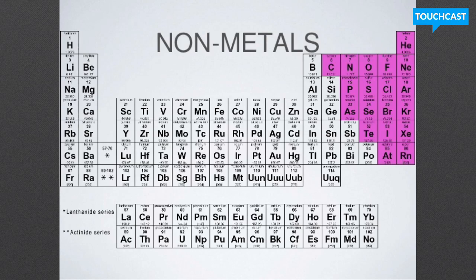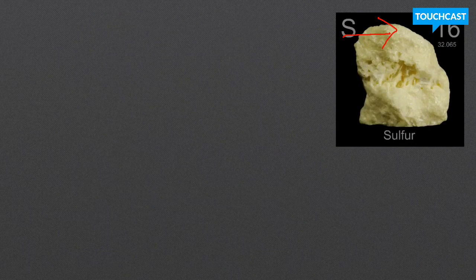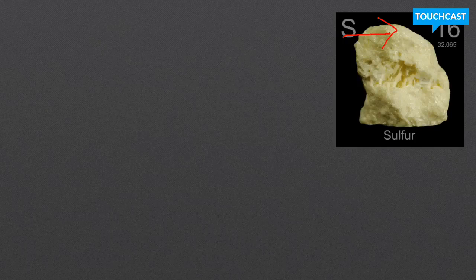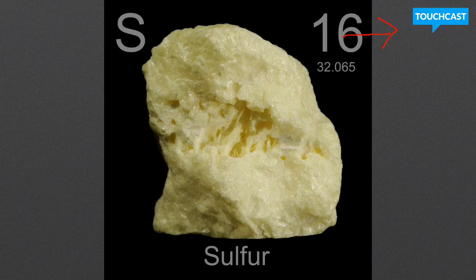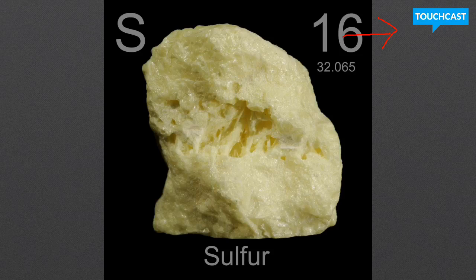The next category that we are going to speak about is non-metals. Non-metals are on the opposite side of the periodic table, so non-metals tend to be all the way to the right. On this side over here, we have all of our non-metals. An example of a non-metal would be sulfur. Sulfur is not malleable, it is not ductile, and it does not have a luster. There are some non-metals that have luster, but sulfur is not one of them.